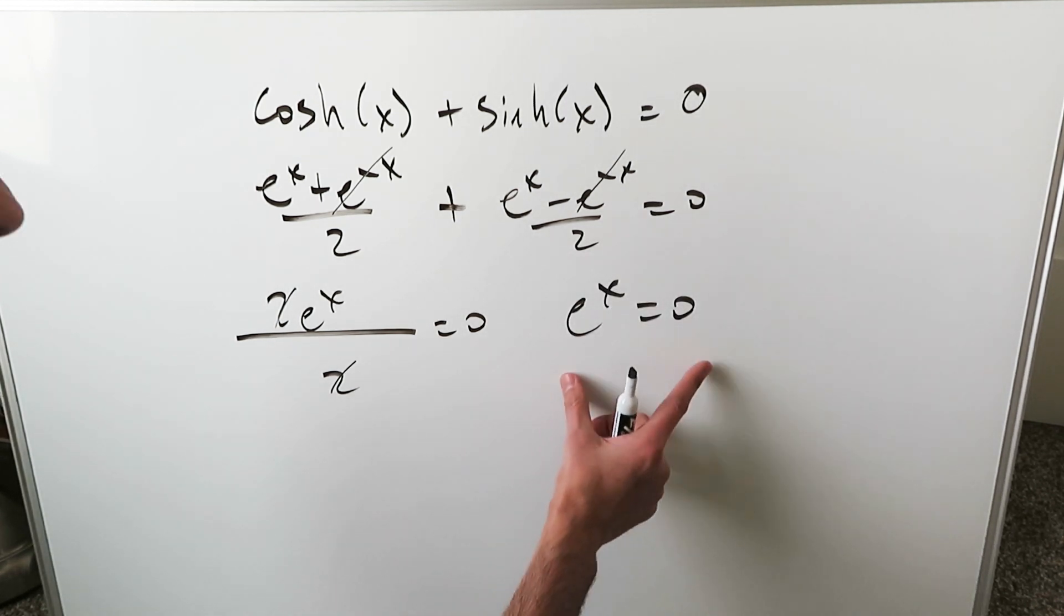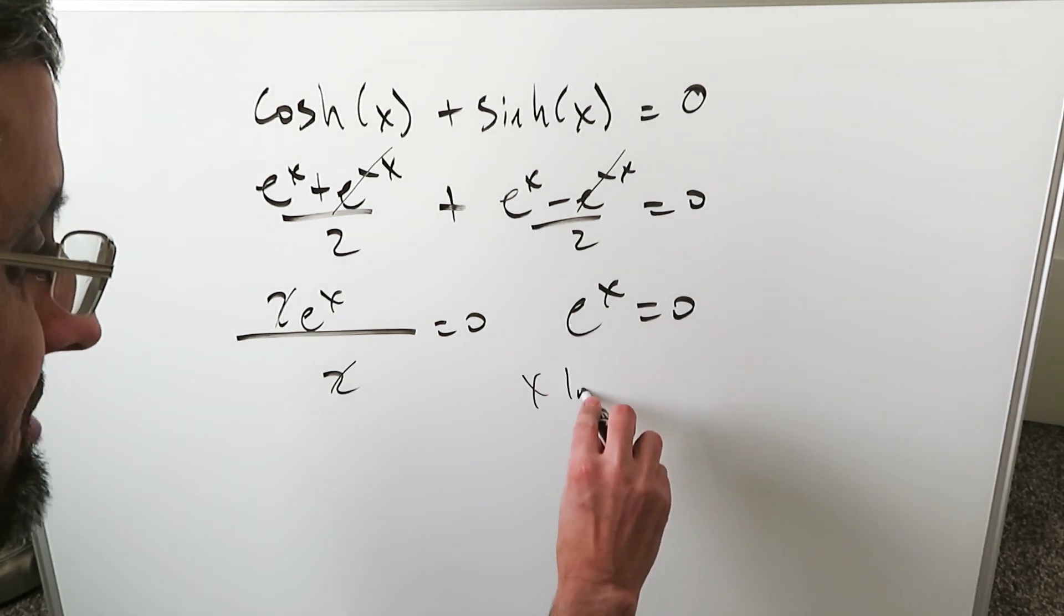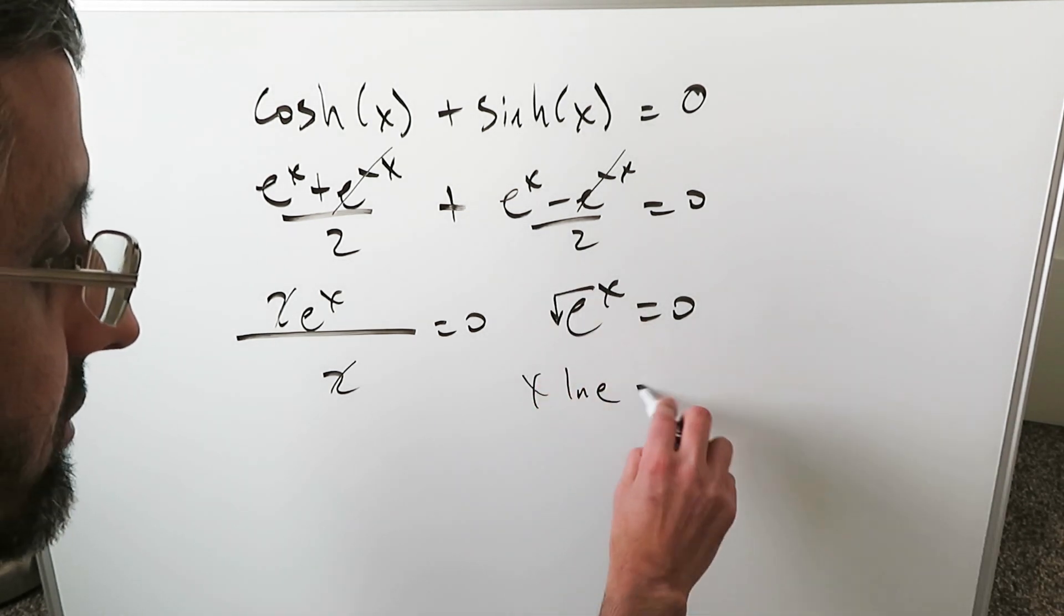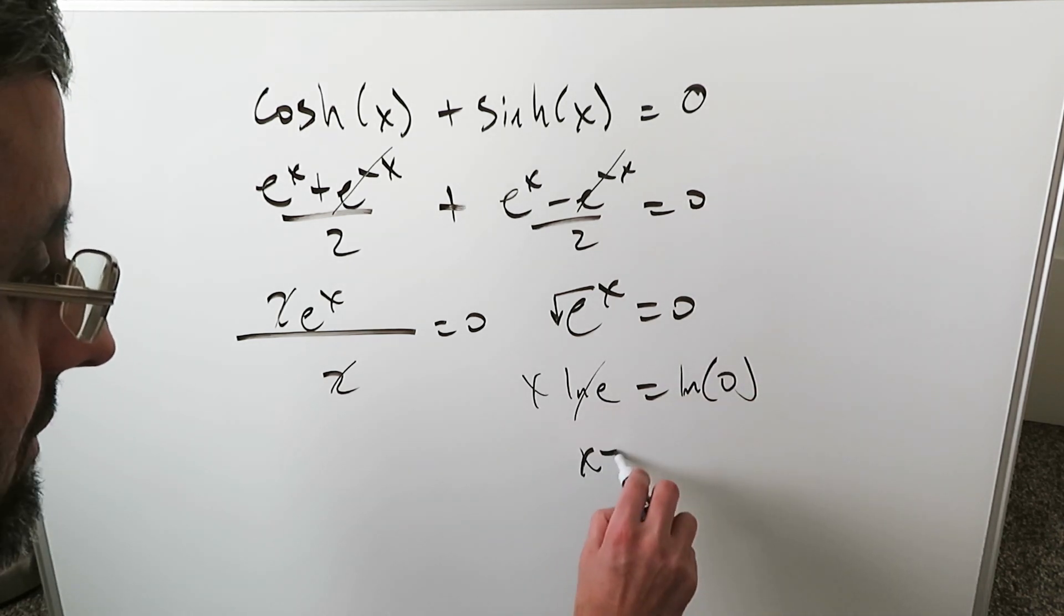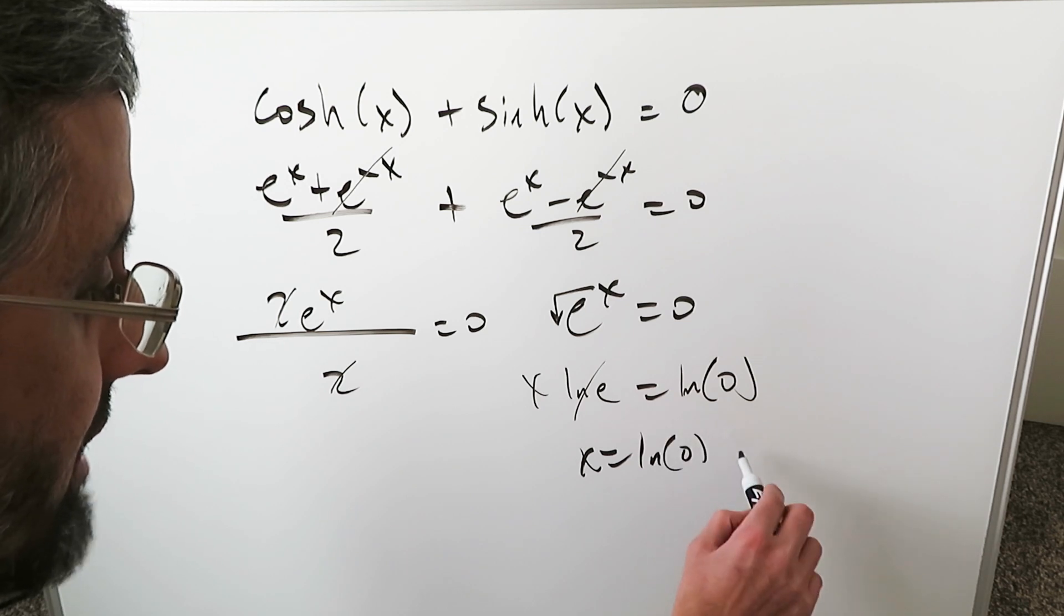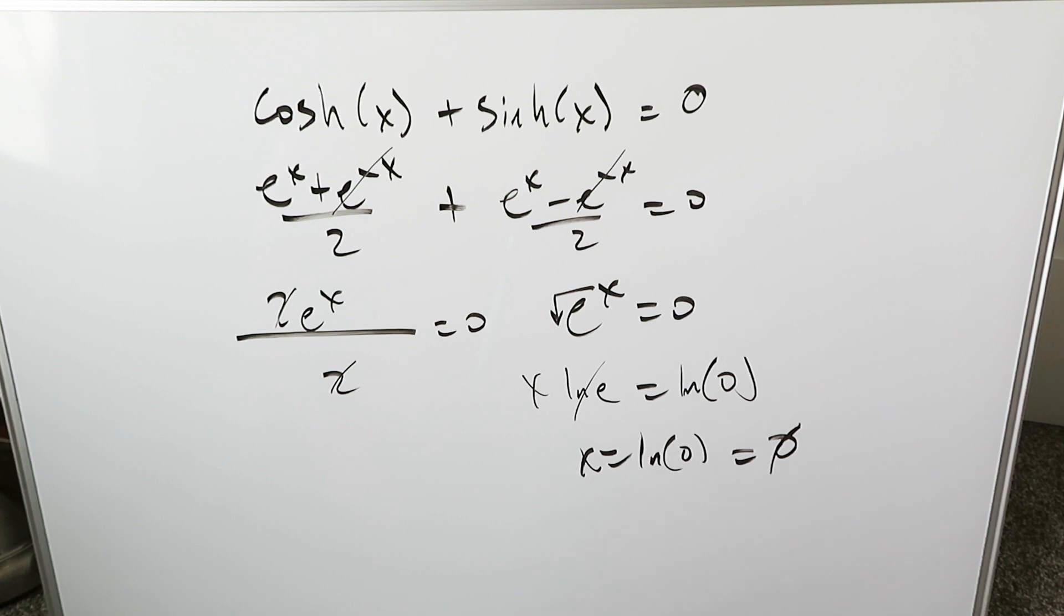For the precalculus student, they will go through the properties of logs. What they will do is x natural log e equals natural log 0. This is equal to 1. x equals natural log 0, and you end up finding out it's undefined because you run this on your calculator and it's undefined.